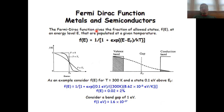How can we quantitatively describe the number of charge carriers in more depth? You can do this using a function called the Fermi-Dirac function, which you can apply to both metals and semiconductors. What the Fermi-Dirac function tells you is the fraction of the allowed states f(E) at a particular energy level that are populated at a particular temperature.